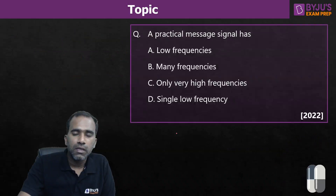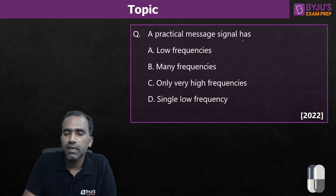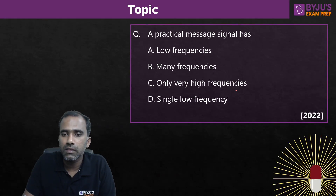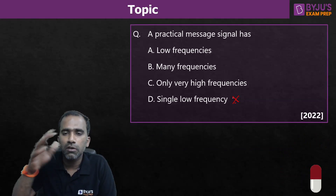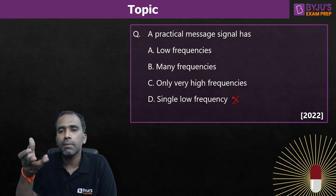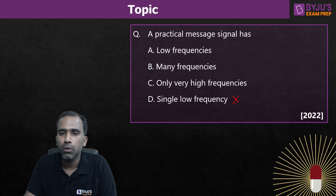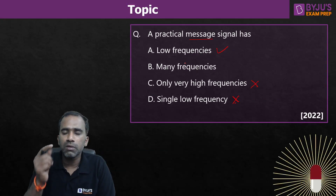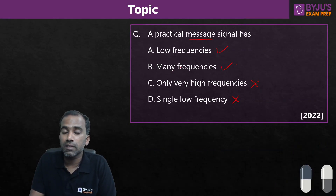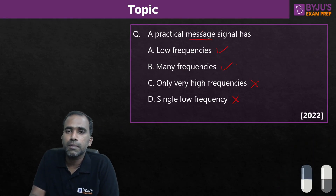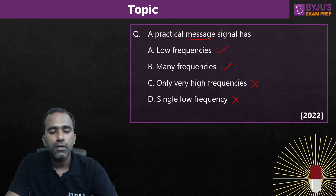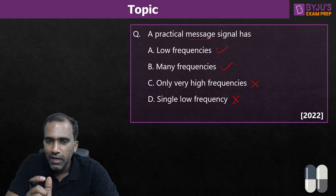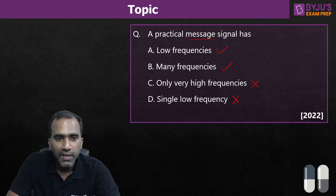To conclude: any practical message signal has many frequencies — not a single low frequency — because practical messages do not vary like a simple sinusoidal waveform. Any complicated shape has multiple frequencies. Messages in unmodulated form have a range of low frequencies, and definitely multiple frequencies are present. I hope this capsule session is useful for you. Try to understand the meaning of frequency the way I have explained. Thank you, see you next time, take care, bye-bye.